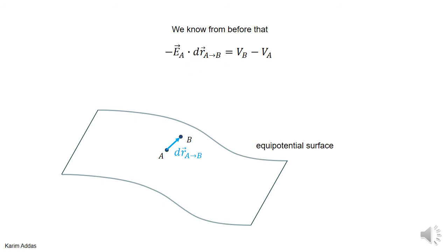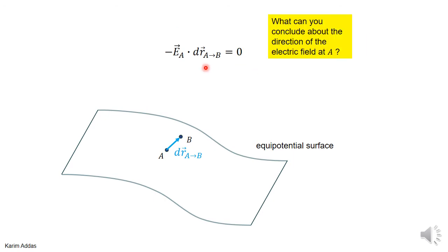Since vb minus va is zero, that means minus E dotted into dr is zero. The vector dr is not zero — it points from a to b. The electric field magnitude is also not zero; for any charge distribution there are always equipotential surfaces, and the electric field is nonzero at an arbitrary point. So what can we conclude about the direction of the electric field vector?